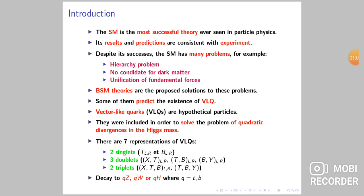In this model, we suppose that vector-like quarks coupled to the third generation of quarks, so they decay to TH, TZ, or BW.